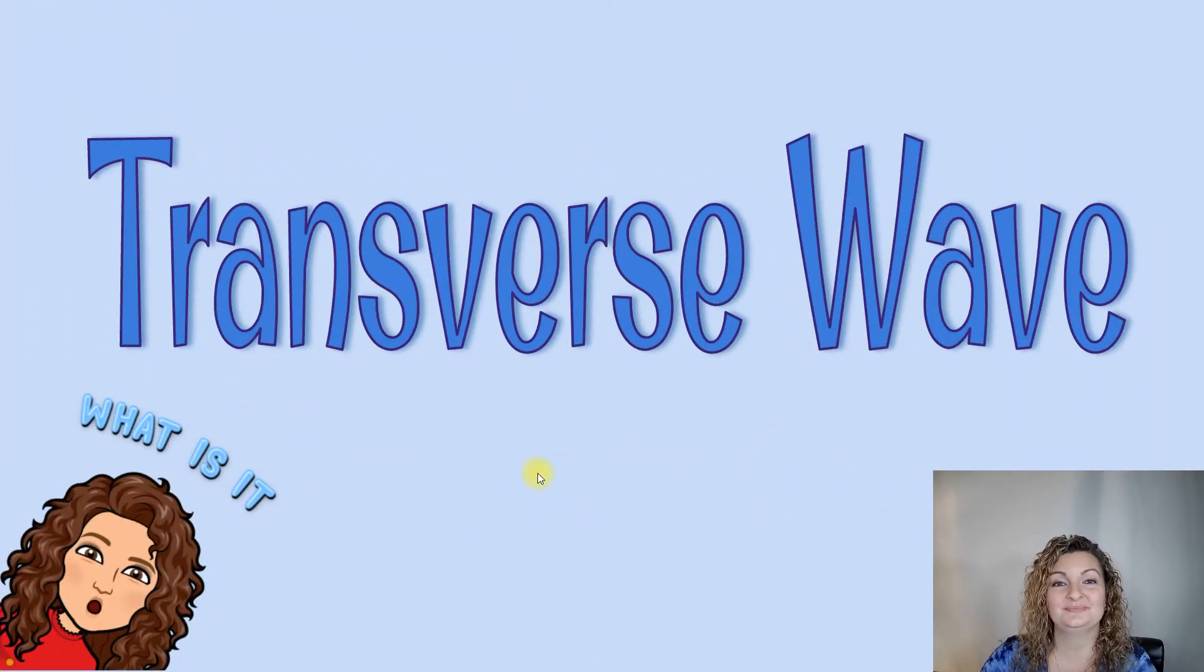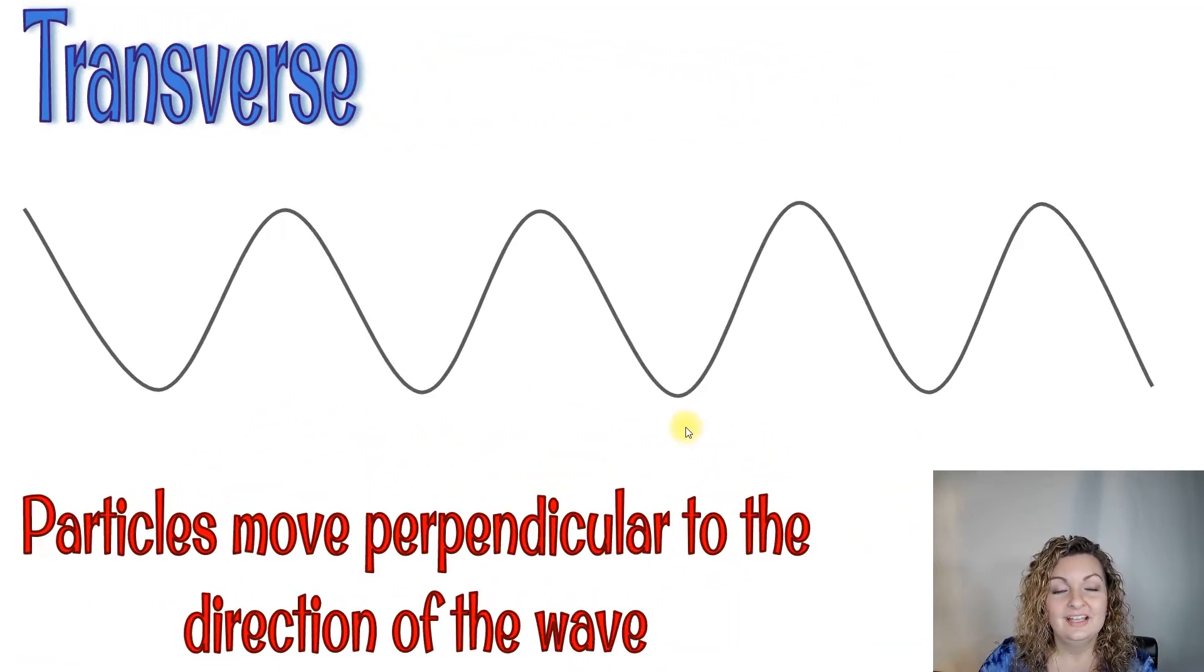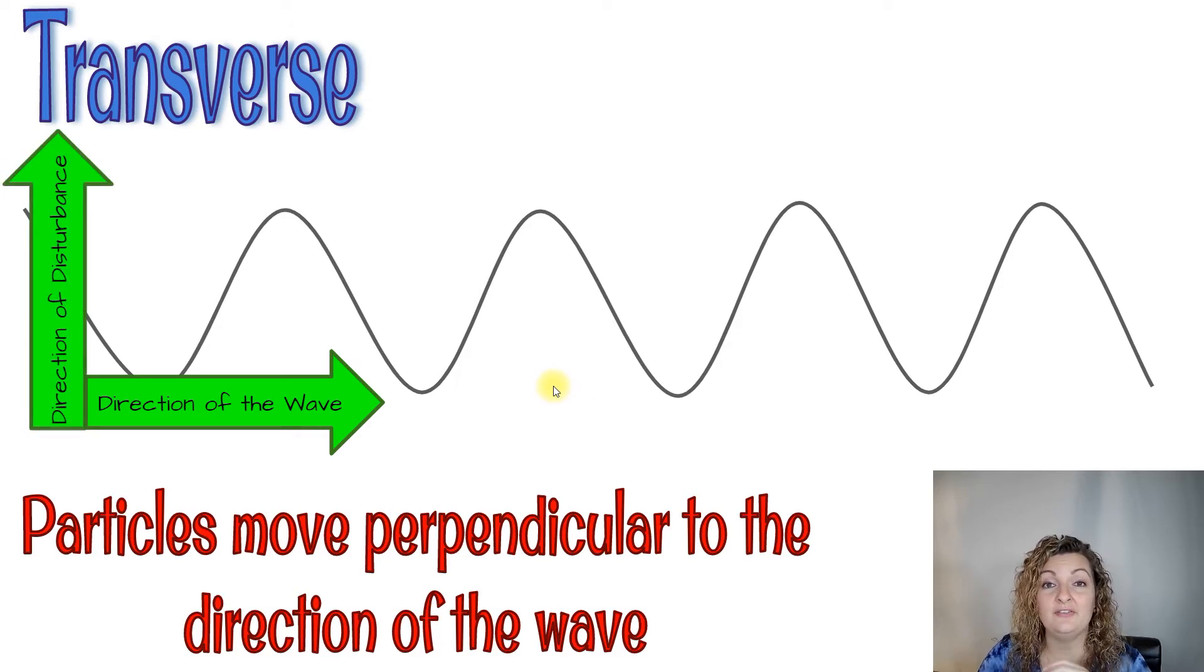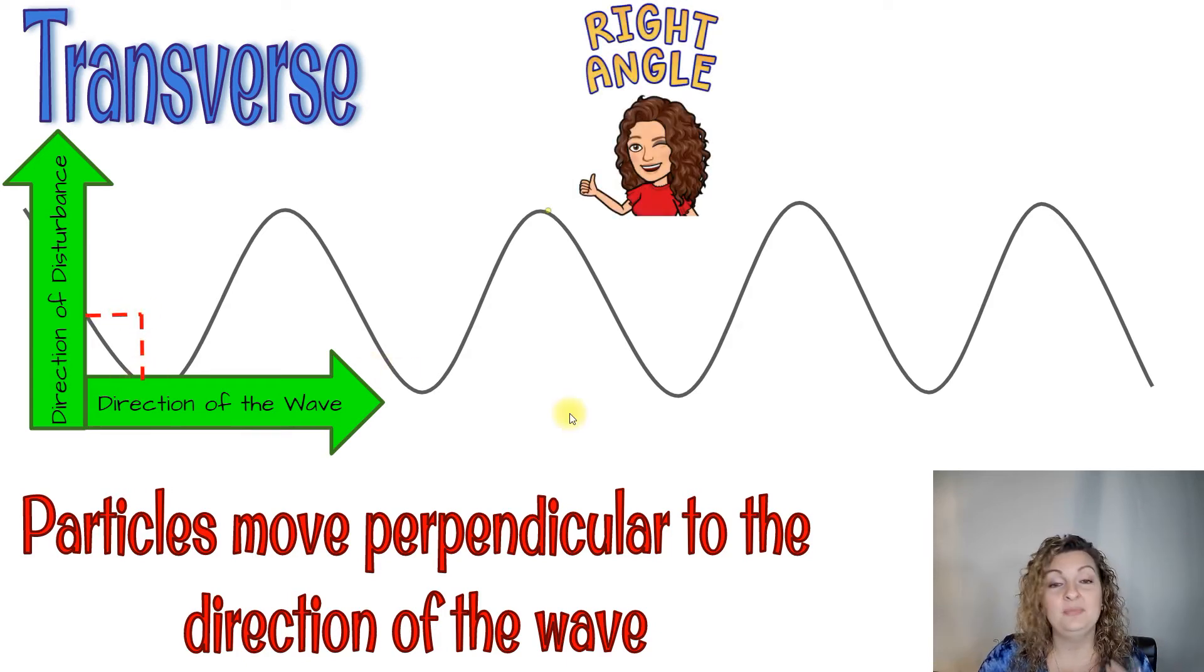Transverse wave. So a transverse wave the particles move perpendicular to the direction of the wave. So if our wave is moving forward then what's going to happen is our disturbance is to have to go in an up or down motion to create this right angle right here meaning perpendicular for a transverse wave.